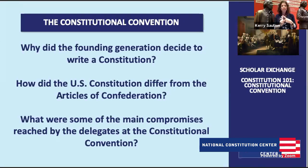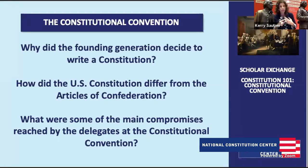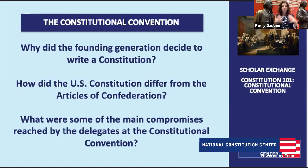Why did the founding generation decide to write a constitution? How did the United States Constitution differ from the Articles of Confederation — and what are the Articles of Confederation? And what were some of the main compromises reached by the delegates at the Constitutional Convention? We can absolutely talk about slavery and how enslaving people was a part of the Constitution and that compromise — we'll save that to the end.